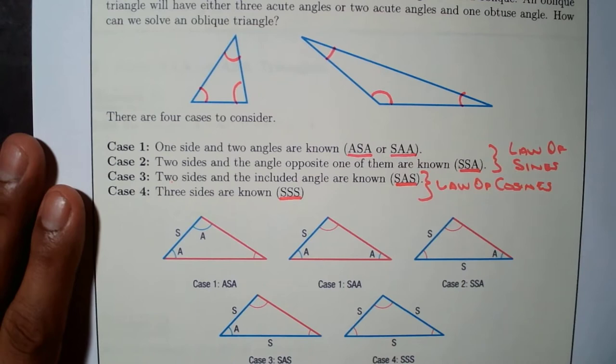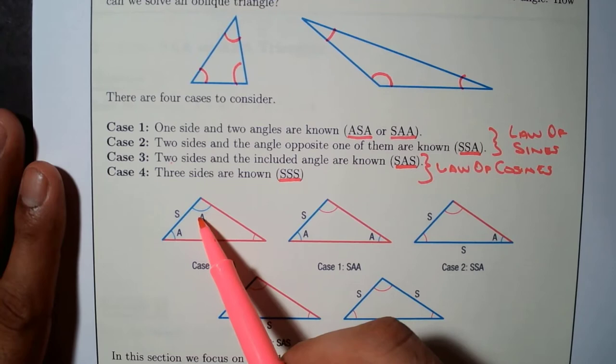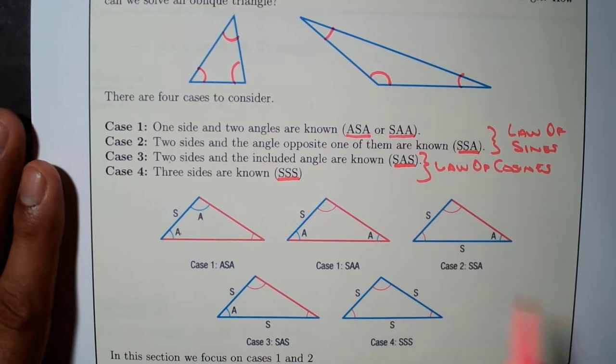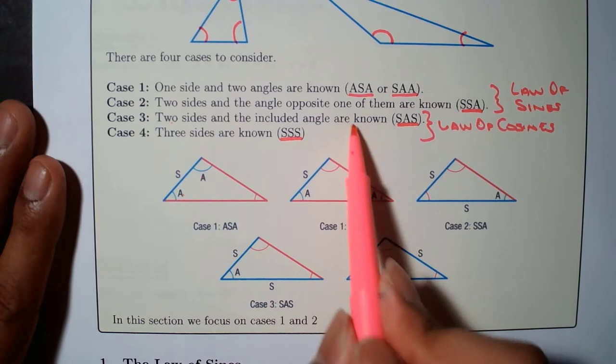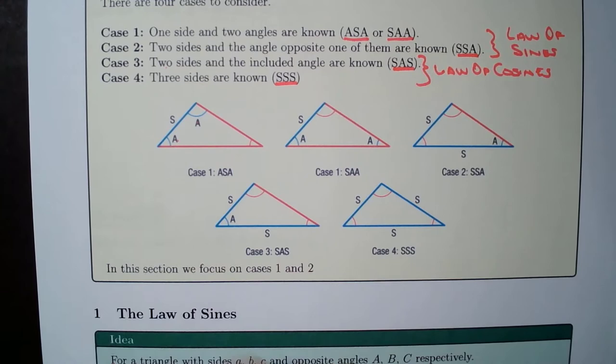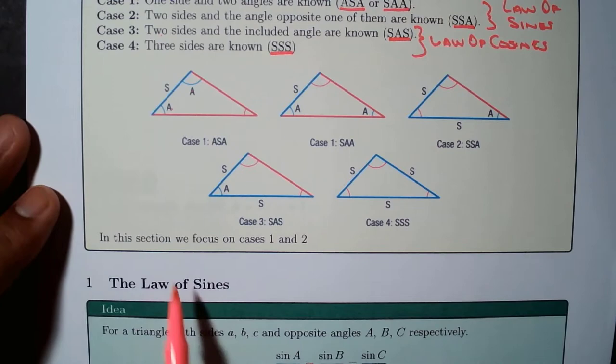Below are the pictures of each case. Case one: we are given two angles and one side. Case two is side-side-angle — the angle is opposite to one of the sides. Case three is SAS: we are given two sides and the included angle between them. And of course the last case, case four, is all three sides. We're going to learn how to deal with every single one in this couple of videos — Law of Sines and the next one, Law of Cosines.